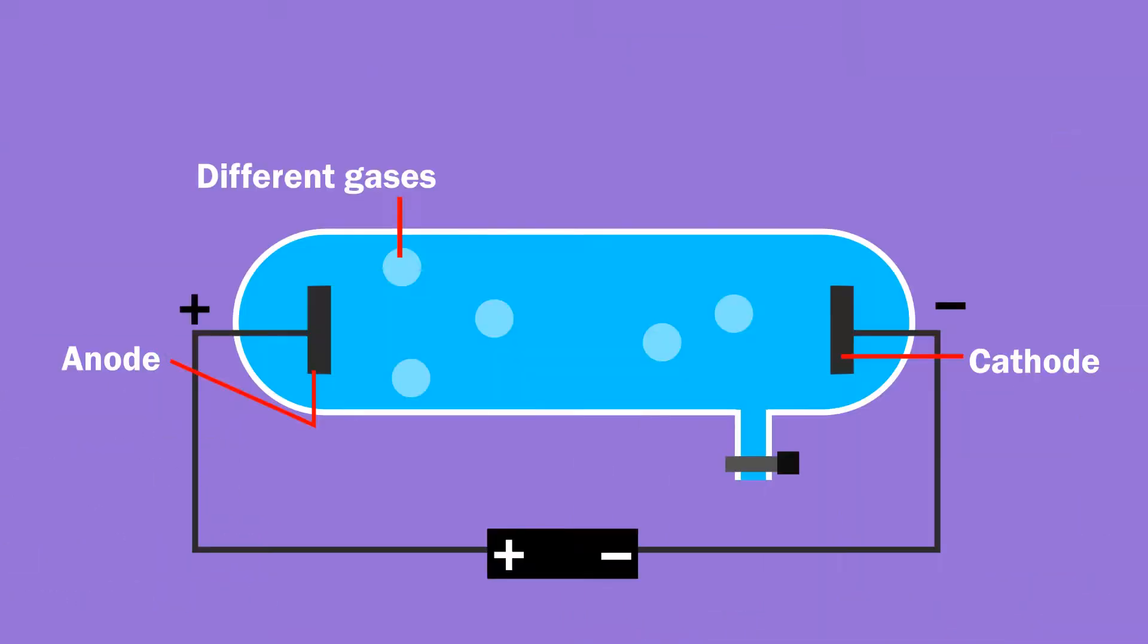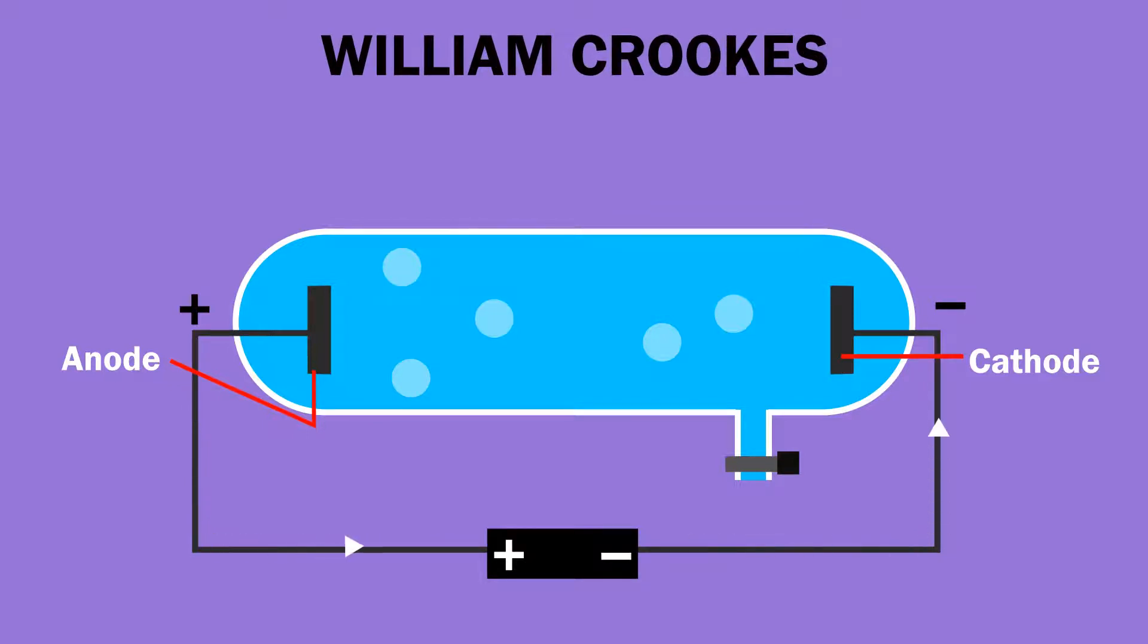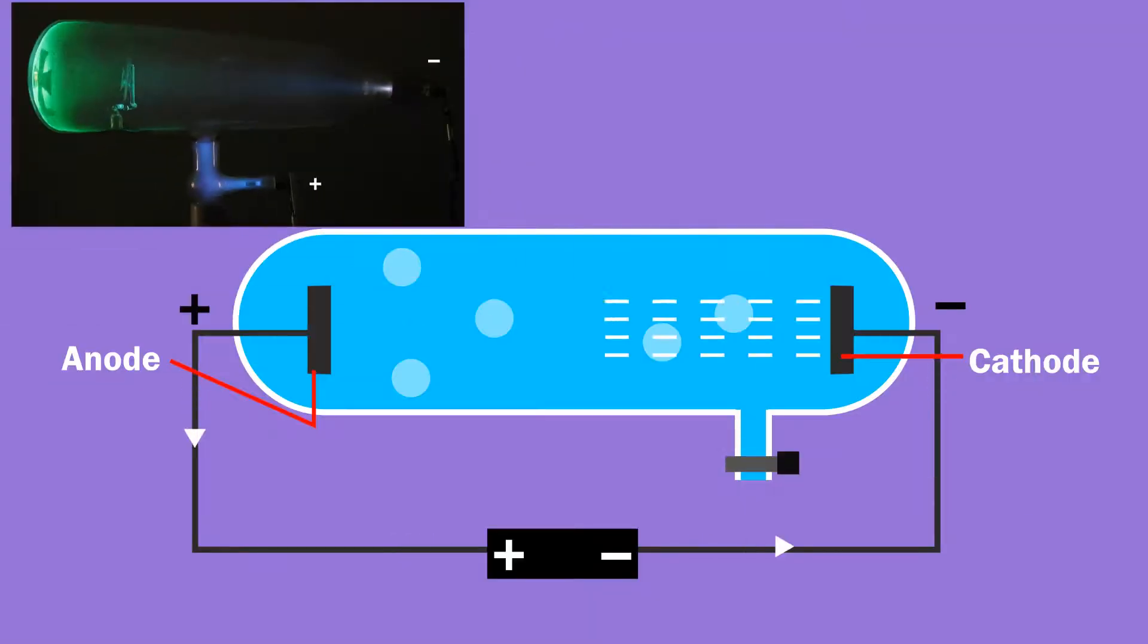Unlike tube lights, the amount of gas in a discharge tube can be controlled by a vacuum pump. One day while experimenting by keeping a very small amount of gas in the tube, a British physicist, William Crookes and his associates, observed a light ray traveling from cathode to anode.